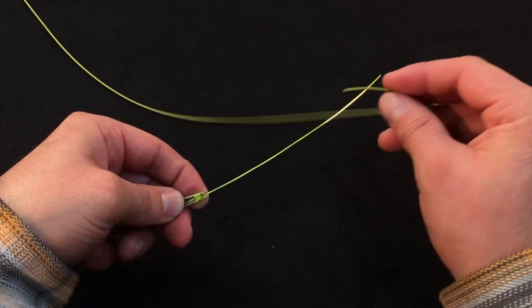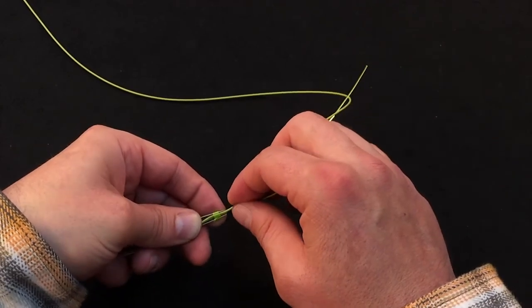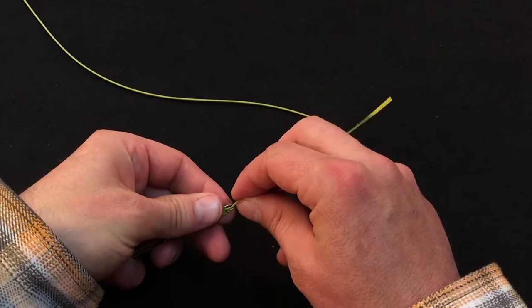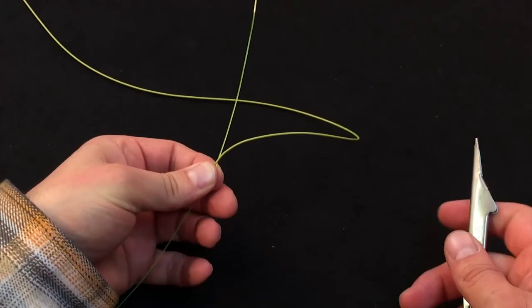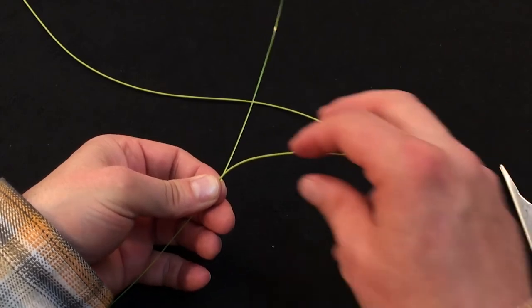Then we'll take our fly line, insert that into the gutter of the TyFast tool, and we're ready to remove the TyFast tool. We're essentially done with it at this stage.